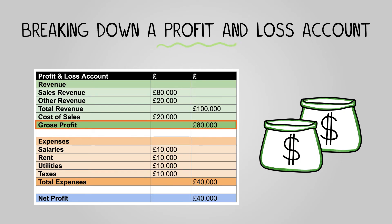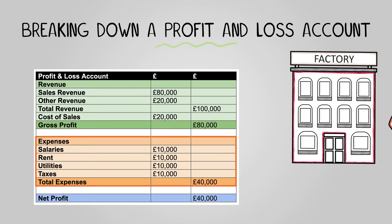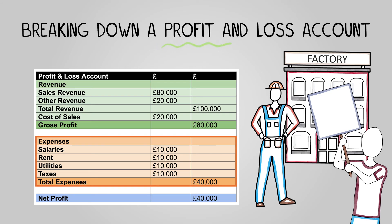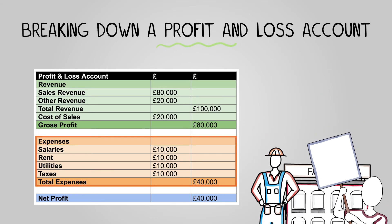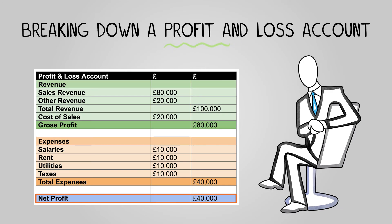Expenses are the operational costs not directly tied to product or service creation. They encompass items like office rent, marketing efforts, and staff salaries not involved in production. Net profit is the bottom line — it's the total profit or loss after all costs and expenses are deducted from the revenue.